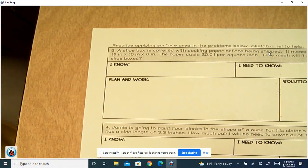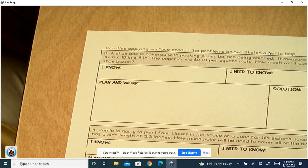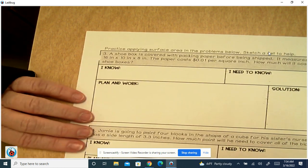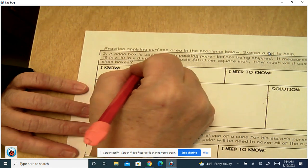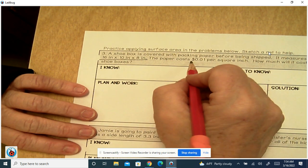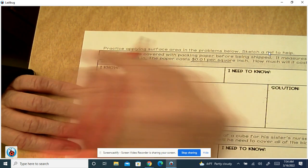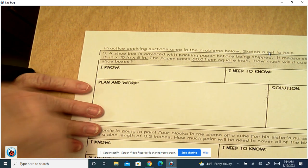Alright, problem 3. A shoebox is covered with packing paper before being shipped. It measures 16 by 10 by 8. The paper costs 0.01 cents per square unit. How much will it cost to cover three boxes?